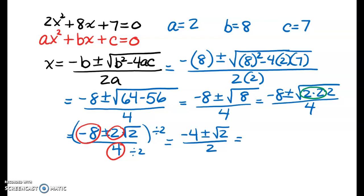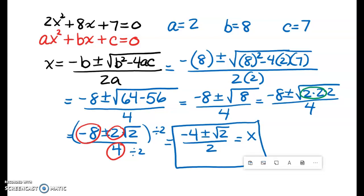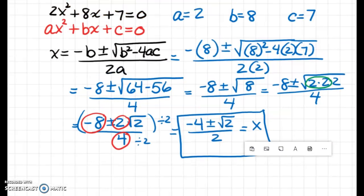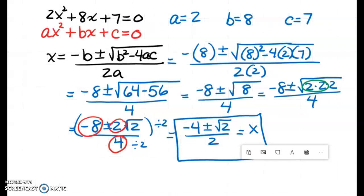Since negative 4 and the square root of 2 are not like terms, they can't be added, so I'm done. That's all I have for this video. These examples should help you with the last 4 problems on your worksheet.